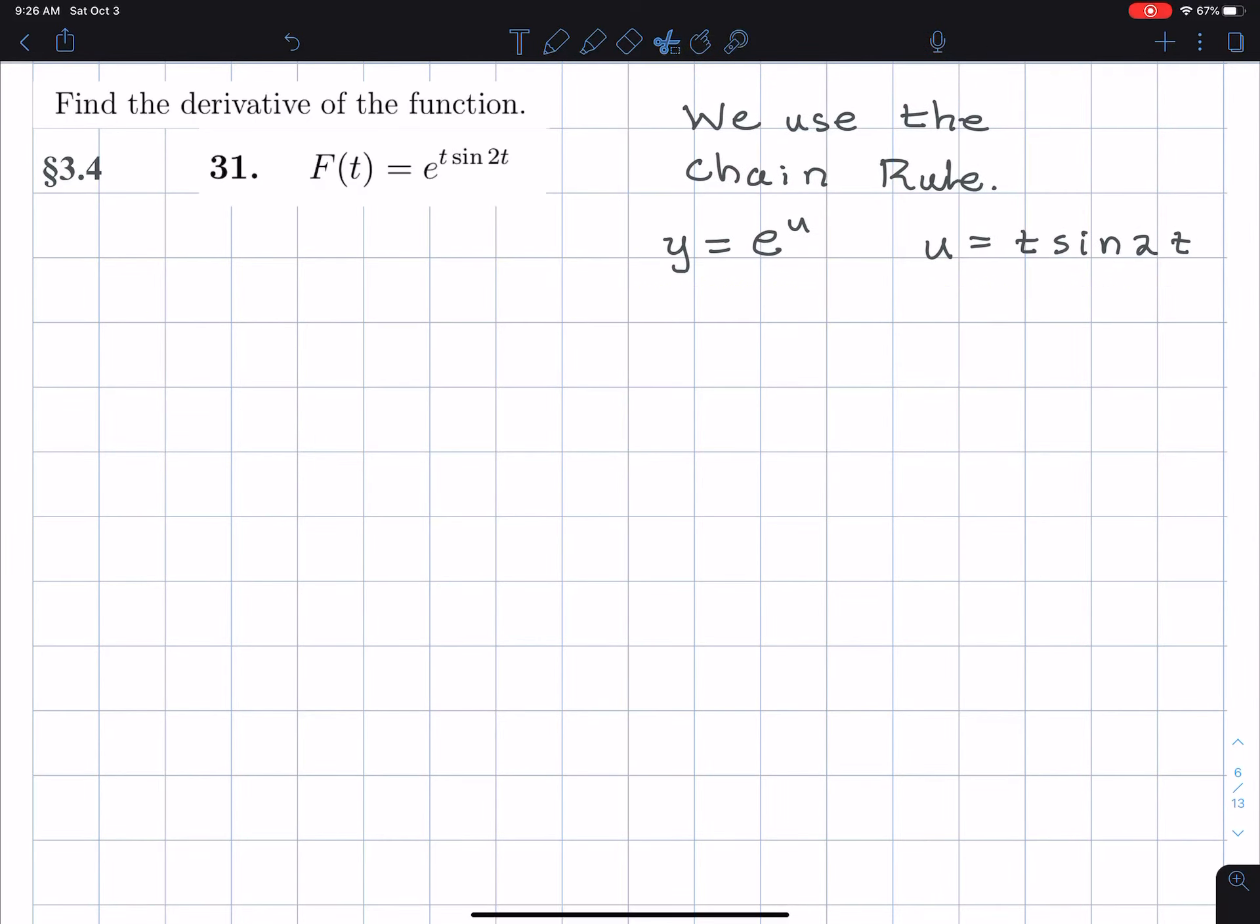Okay, now the chain rule says that first we take the derivative. Let me write this down. To find dy dt, I first find the derivative y with respect to the outside function. So I find dy du. That's sort of, I mean, that's very easy. The derivative of e to the u is e to the u. But then I multiply by the derivative of u with respect to t.